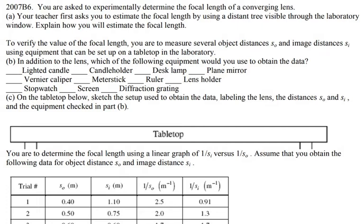The question states that you are asked to approximately determine the focal length of a convergent lens. Your teacher first asks you to estimate the focal length by using the distant tree visible through the laboratory window. Explain how you will estimate the focal length. To verify the value of the focal length, you are to measure several object distances as SO, it would be the distance to the object, and image distances as SI, using equipment that can be set up on a tabletop in the laboratory.